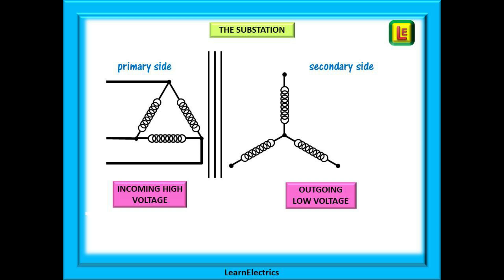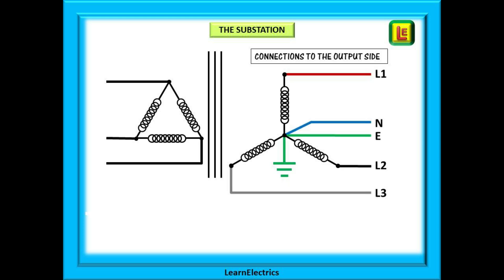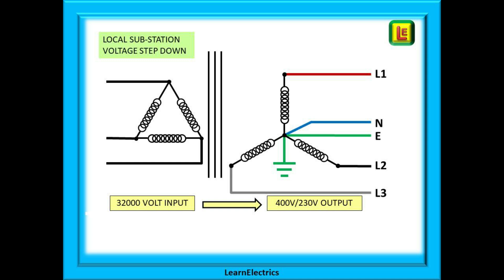On the right is the output side, the outgoing low voltages. This arrangement looks like a star and this is the secondary side of the transformer. Looking at the output side we now have a neutral together with the three phases and an earth. The substation is going to step down the voltage. That is to say a high voltage is input to the transformer and a lower voltage, a stepped down voltage, is output. Here we have shown a 32,000 volt input and a 400 and 230 volt output.